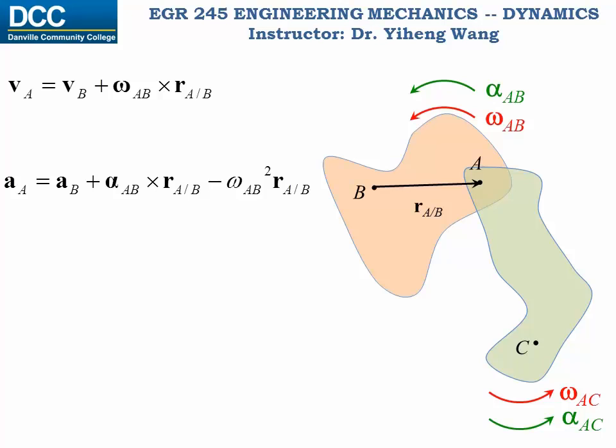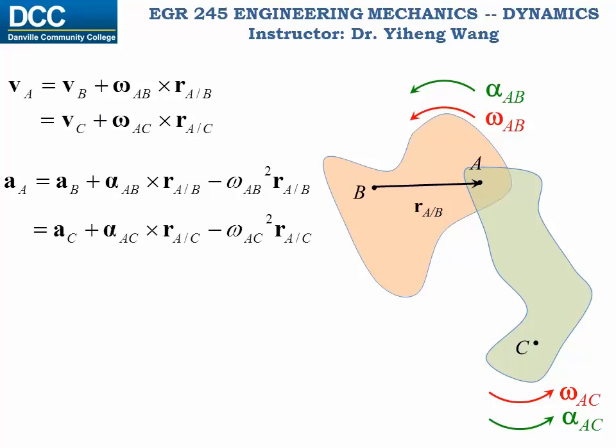During problem solving, of particular interest are points that belong to more than one rigid body — normally those are points of joints. Like in this case, point A belongs to not only rigid body AB but also rigid body AC. Therefore its linear velocity and linear acceleration can also be determined through rigid body AC. Here, rA/C is the relative position of A with respect to reference point C. This provides the additional equations needed to solve the problem.